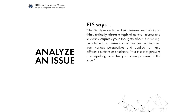I've highlighted in bold some of the most important concepts from this description. The first is that we need to be thinking critically — really looking at the issue and thinking about what we believe. Next, we need to express our thoughts in writing, so this is looking for our opinion. We need to consider the issue, break it down, and formulate our own opinion clearly. Finally, you need to present a compelling case for your own position, meaning you really need to be convincing — not just stating your opinion, but arguing it in a way that can convince the reader to agree with you.